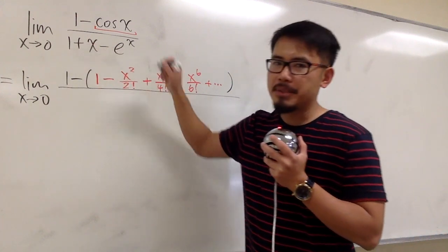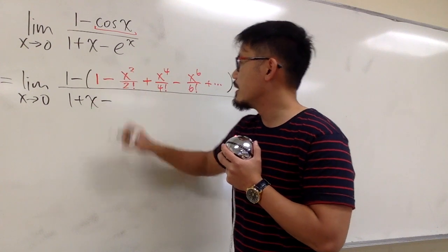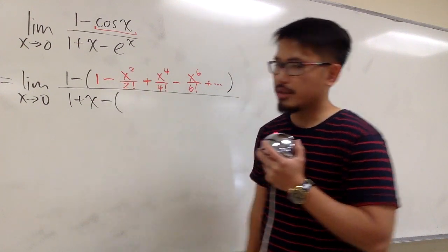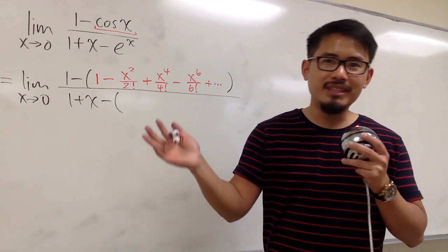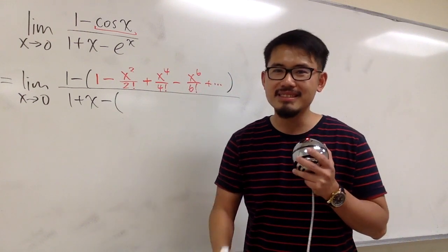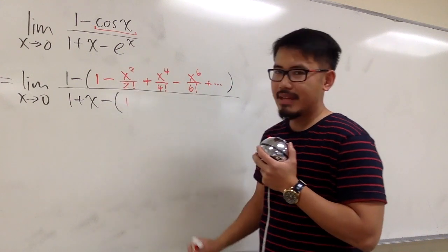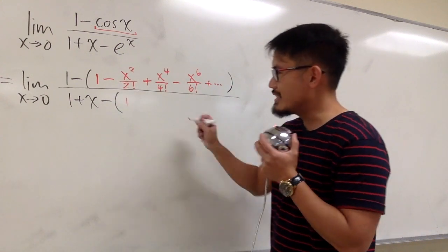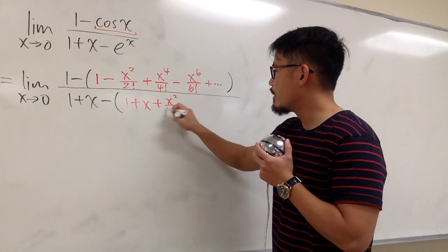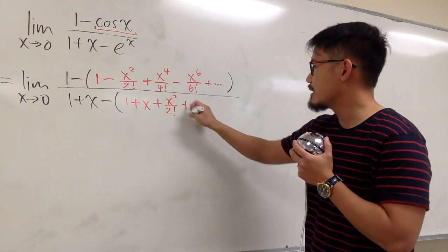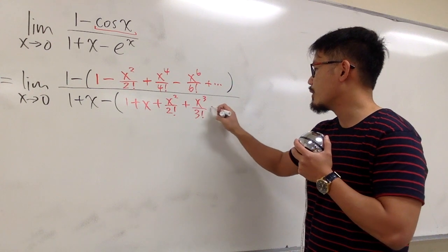Now let's look at the denominator: 1 plus x, minus e to the x. For e to the x, it's just all the powers — both even and odd — and all the factorials. It begins with 1, then plus x, then plus x squared over 2 factorial, then plus x to the third power over 3 factorial, and so on.